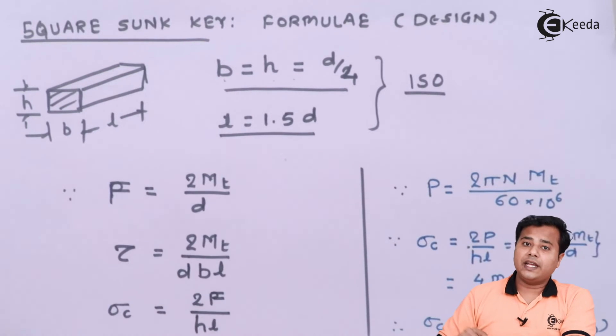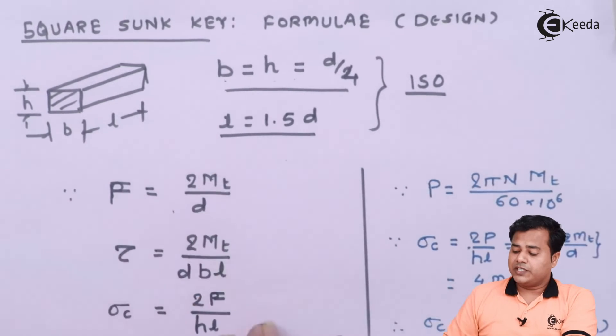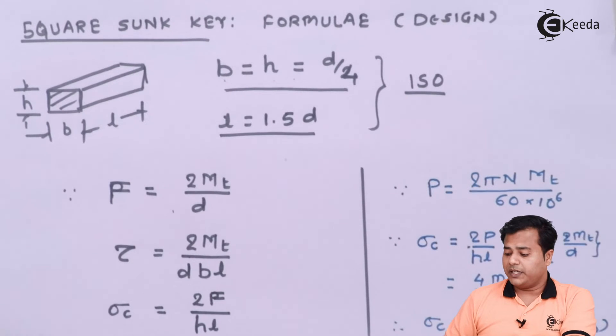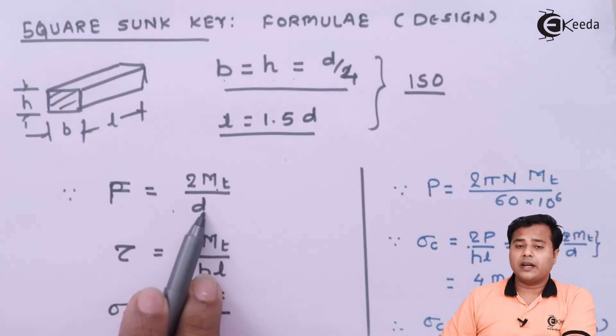Next important formula is the force. Like we have seen in case of compression, compressive force will act on the key that will be having this particular value. Of course, the derivation is not a part of our scope, that's why we are skipping it. But it will be the torsional moment divided by radius. So that gives me this particular formula.